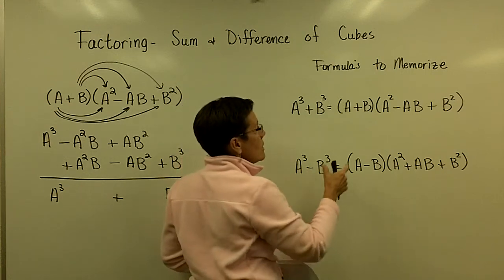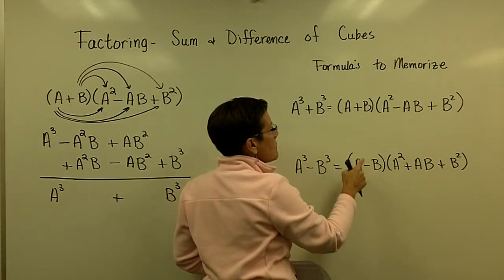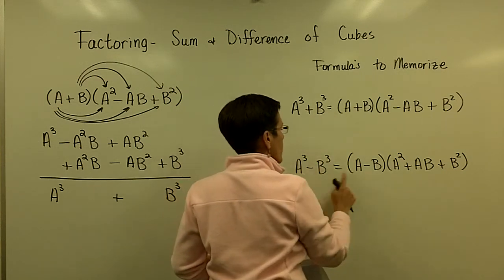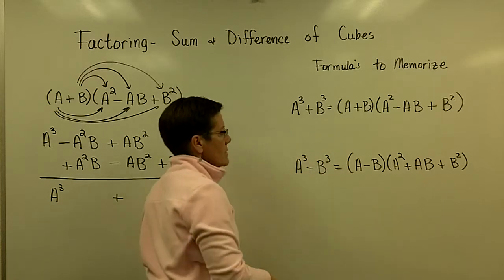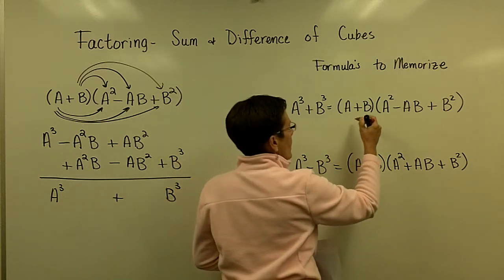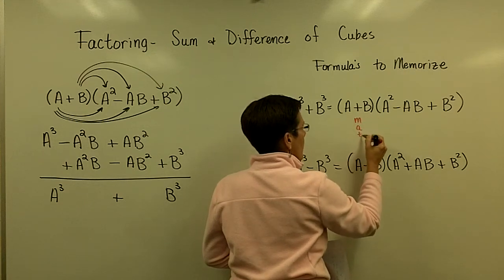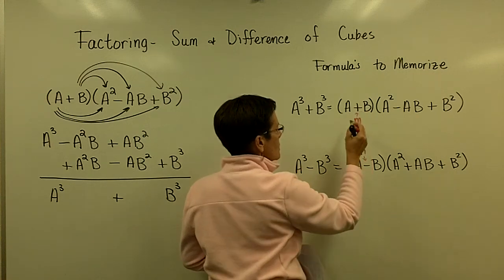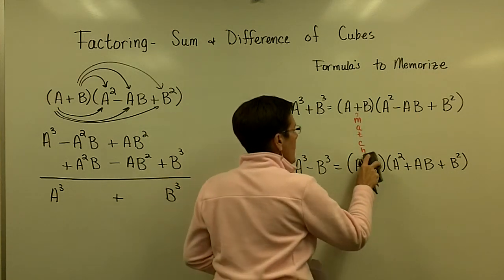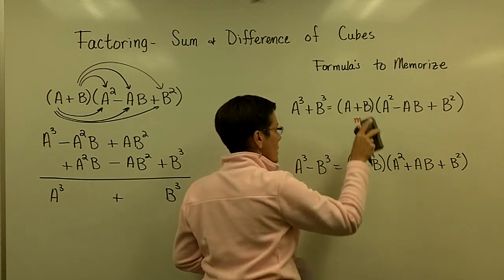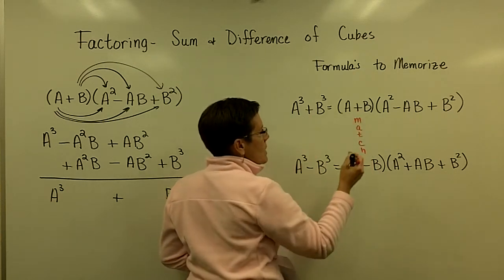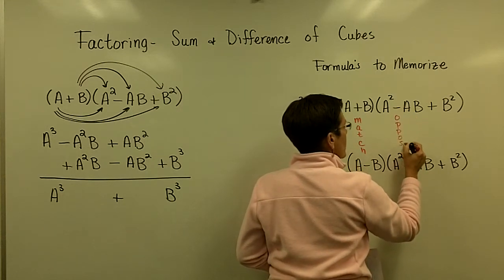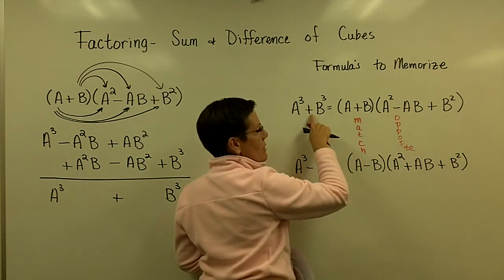Could I ask you to notice a couple of things? The binomials look alike, but this one right here — the binomial has the same sign, and this one right here — the binomial has the same sign. I'm going to say that those signs match one another, matching their given problem. So this sign matches that sign. This sign right here in the trinomial is always opposite of that one.